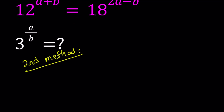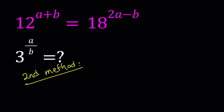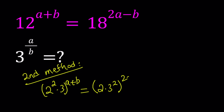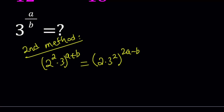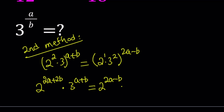For my second method, I'm going to use exponents. Let's write 12 as 2 squared times 3, and raise it to the power a plus b. For 18, I'm going to write 2 times 3 squared. Now let's distribute the powers: 2 squared raised to a plus b gives 2 to the power 2a plus 2b, times 3 to the power a plus b. On the right-hand side, 2 to the first multiplied by 2a minus b gives 2 to the power 2a minus b, times 3 to the power 4a minus 2b.